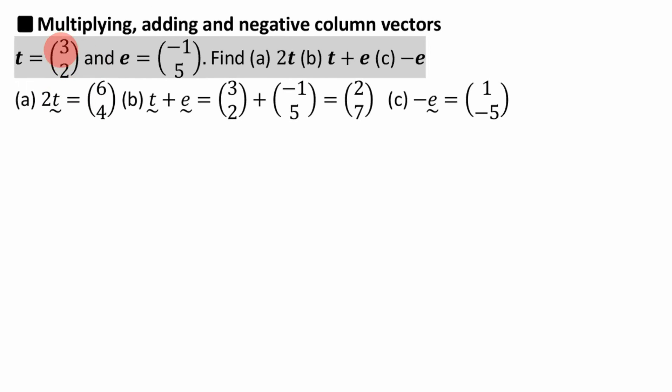This vector is saying go 3 right and 2 up. If you do that twice, have 2 t's, then you'll be going 6 right and then 4 up, just like it says.